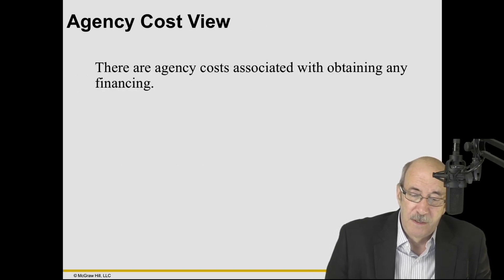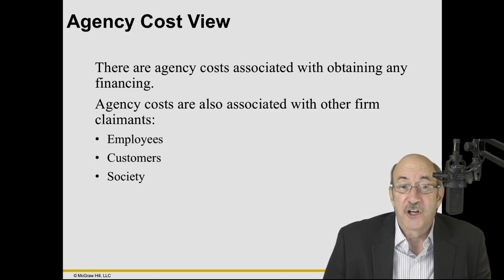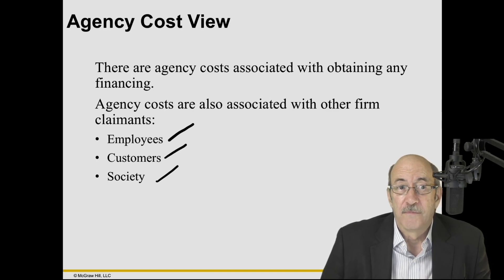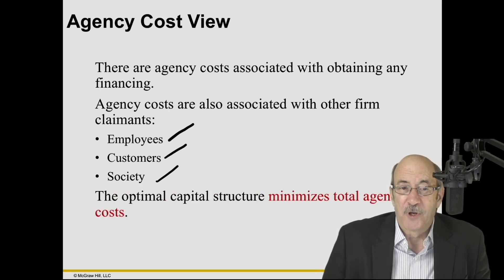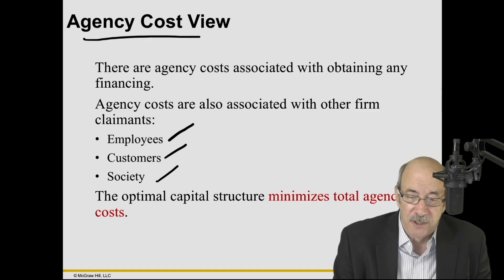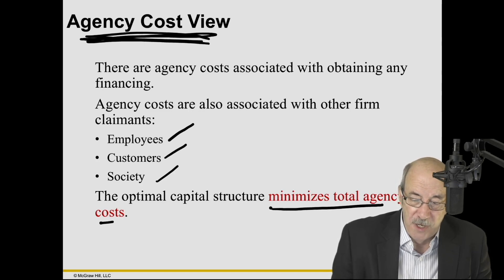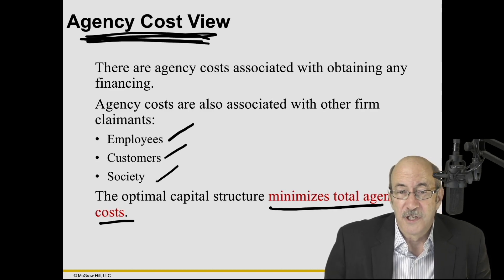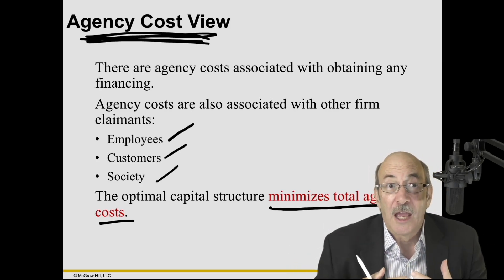There are agency costs associated with obtaining any sort of financing, and agency costs associated with other firm claimants as well — employees, customers, society in general. The optimal capital structure in this agency cost view is the level of leverage that minimizes the sum of the total agency costs — just another perspective and another way of looking at capital structure.